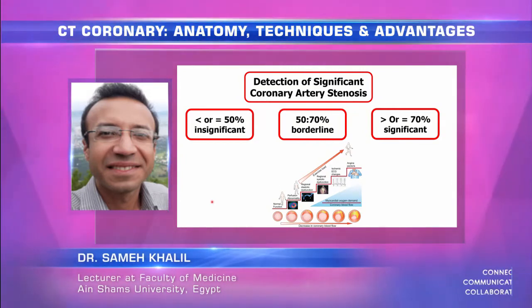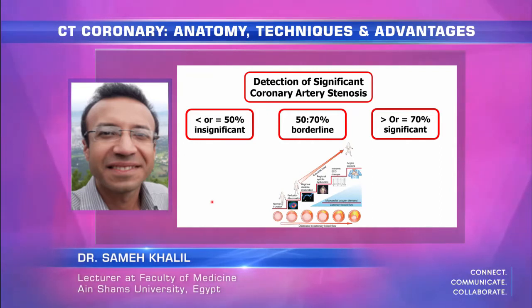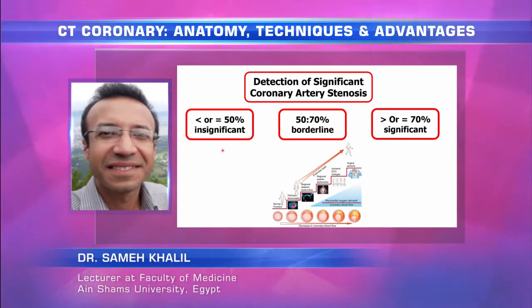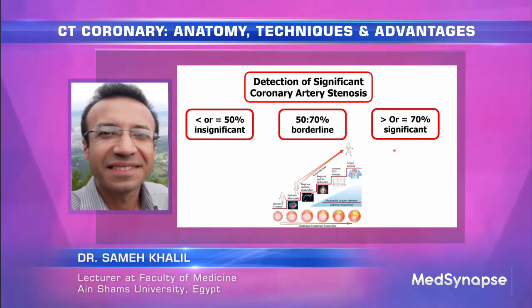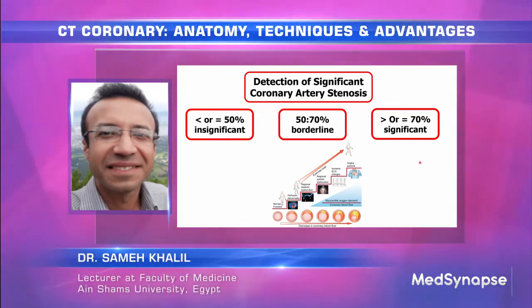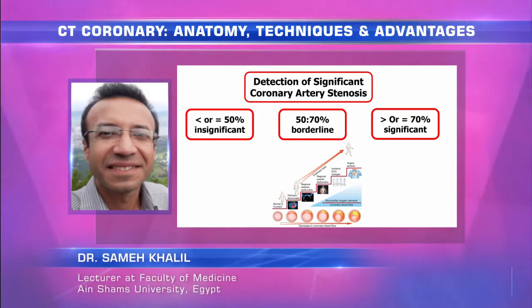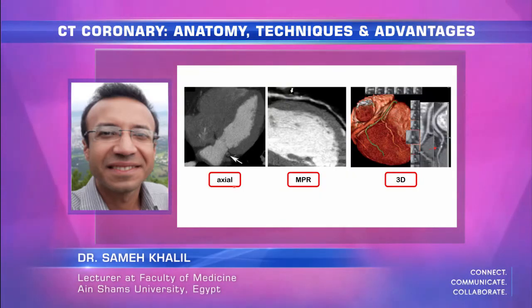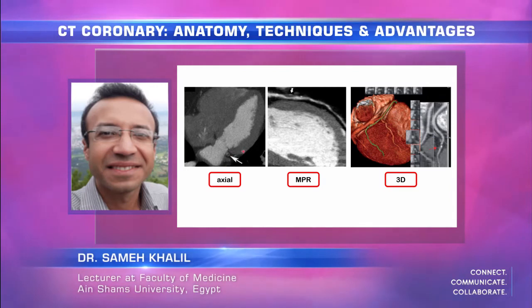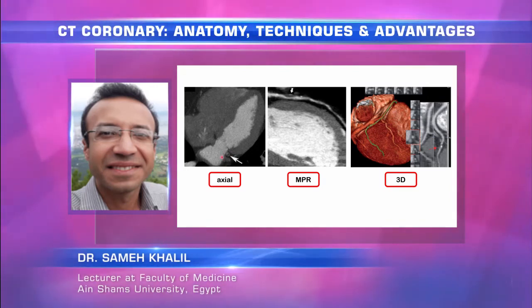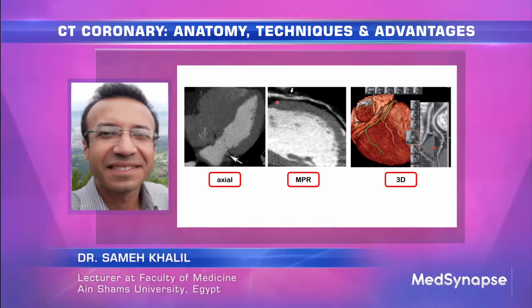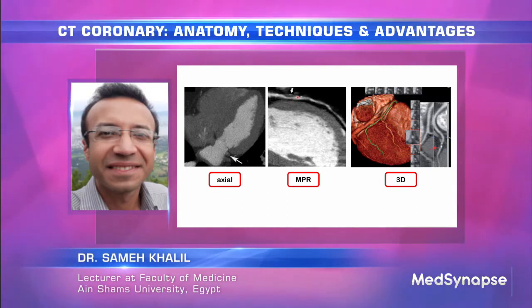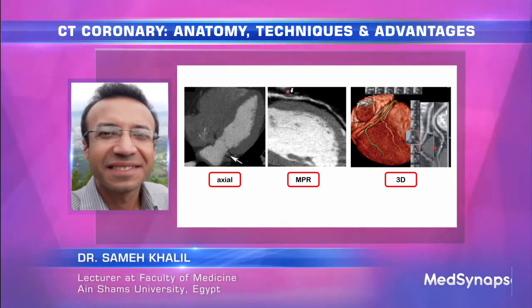Regarding plaque significance — similar to carotid circulation — plaques below 50% are insignificant, plaques from 50–70% are borderline, and plaques beyond 70% are significant. This shows an axial view of a totally occlusive plaque and a multi-planar reformat of a significant mixed plaque, where we can see soft material, fat, fibrous tissue, and a calcified dot.